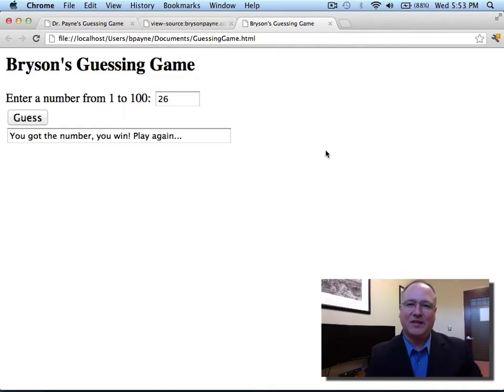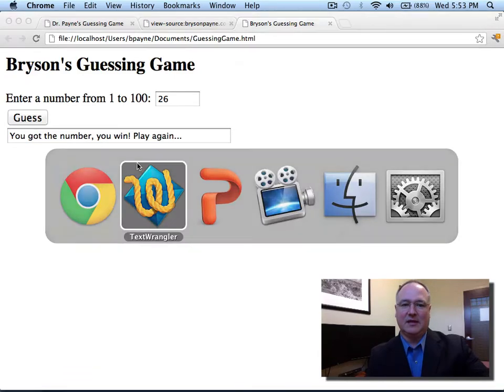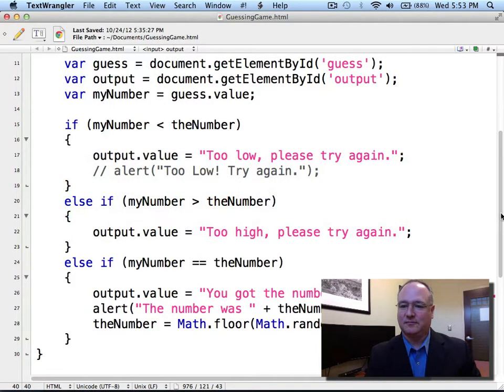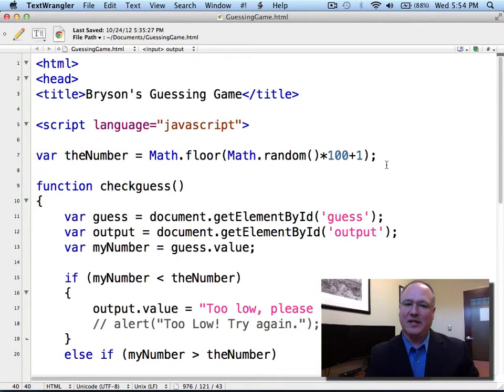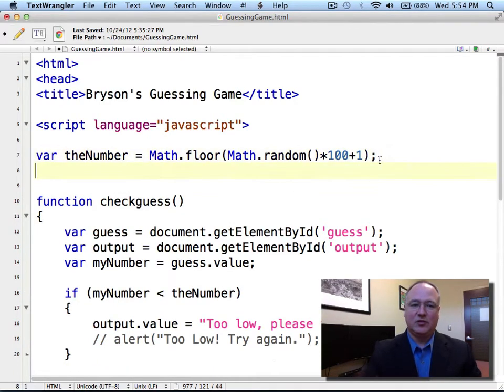But I'd like to keep track of how many times I had to guess to get my number. Because I'm claiming that with a binary search, we can get a number between 0 and 100 in less than eight guesses or less every single time. I want to test that and see if I'm getting under eight guesses every time I play the game. So one of the first things I'm going to have to do is enable my program to keep track of the number of guesses.